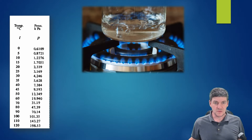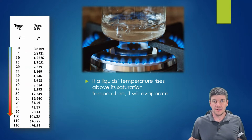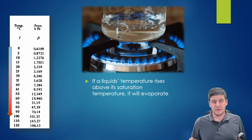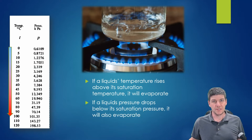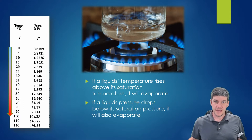If water is at atmospheric pressure, raising the temperature to about 100 degrees Celsius will cause a phase change. However, we can also manipulate pressure to force a phase change. For instance, if we have 50-degree water and we drop the pressure down to about 12 kPa, that 50-degree water would be able to evaporate.